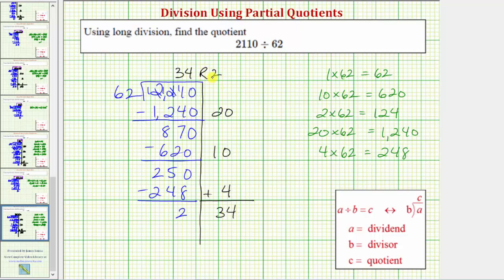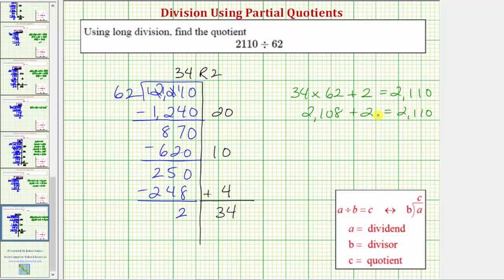So because we have a remainder, we know that 62 is not a factor of 2,110, but this does tell us that the quotient of 34 times the divisor of 62 plus the remainder of 2 equals the dividend of 2,110. Simplifying the left side, 34 times 62 equals 2,108, and of course 2,108 plus 2 does equal 2,110.